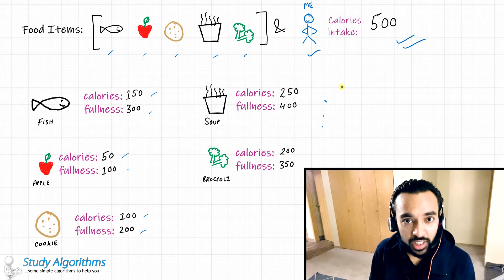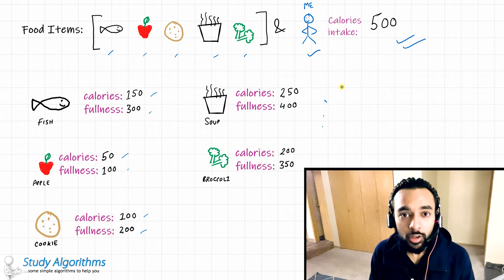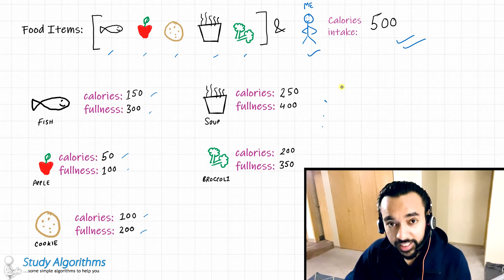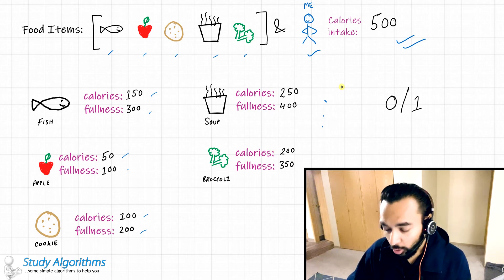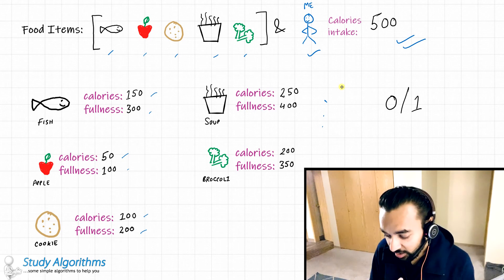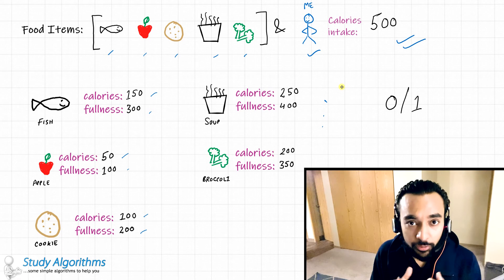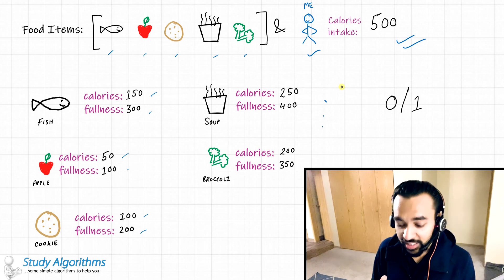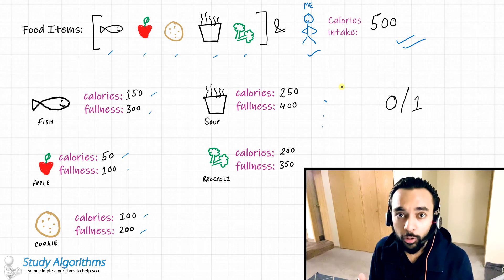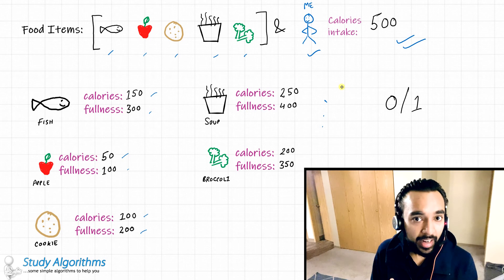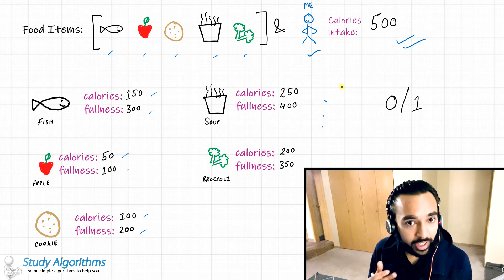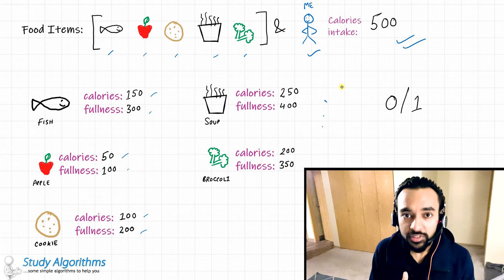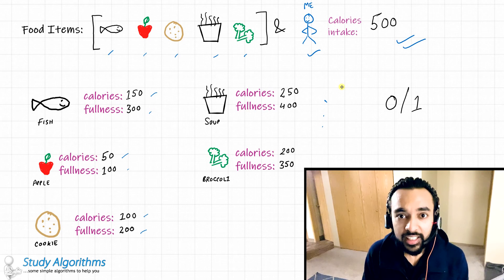The catch here is that when consuming a food item, either you can have it completely or you can decide not to have it. You cannot take a bite of an apple and leave it, or have half a fish and leave it. That is why it is called 0-1 — either you have it or you don't have it at all. Given these conditions — a maximum calorie intake of 500, these food items, their calories and fullness values — I need to achieve maximum fullness without exceeding my calorie count. If this is clear, let's move ahead; if not, rewind and re-read the problem statement, as that is essential to understanding this problem.